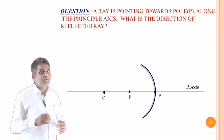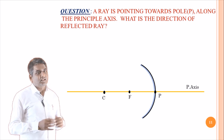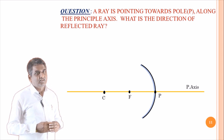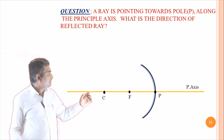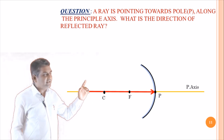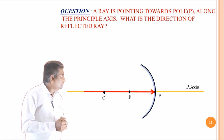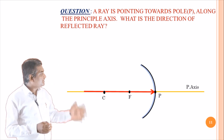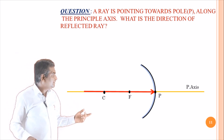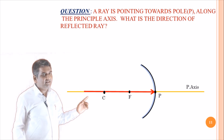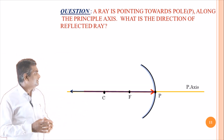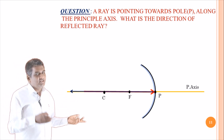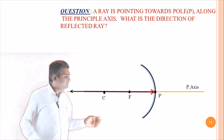Now a question for you: a ray is pointing towards the pole P along the principal axis — what is the direction of the reflected ray? Here the light ray is passing along the principal axis and is incident at the pole P. In which direction will it be reflected? The light ray is reflected exactly in a backward direction, because the angle of incidence is equal to zero in this case.